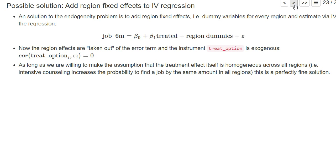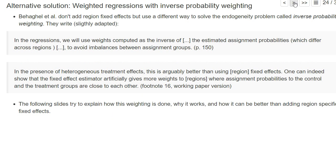However, there are other ways how you could compute this LATE. One way would be to also add interaction terms between the region dummies and the treated dummies. We have learned that having interaction terms can explicitly account for heterogeneous effects. Then we could compute, if we have the coefficient for the treatment dummy and also the coefficients for all the interaction terms, a local average treatment effect. We'll explain this a bit later, but there's also another approach that Behagel and his coauthors has chosen, and they use so-called weighted regressions with inverse probability weighting.